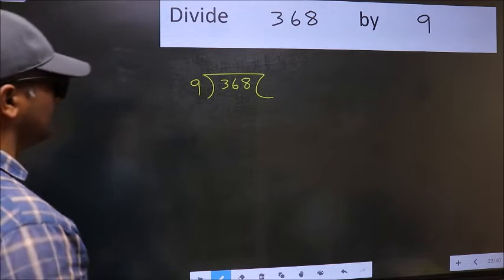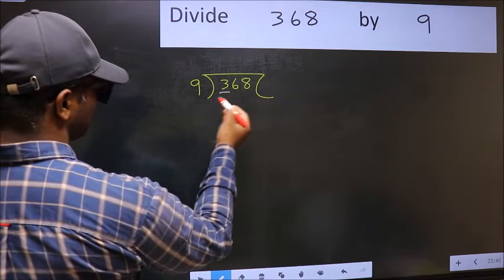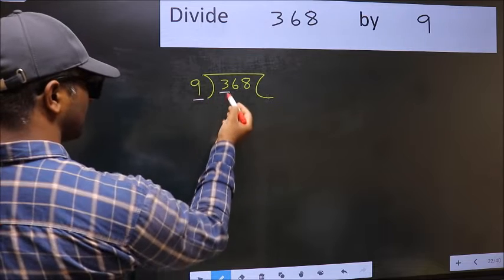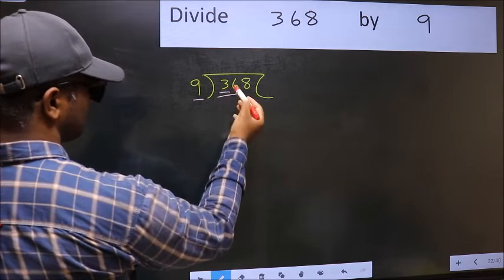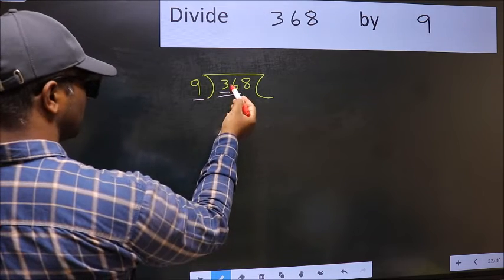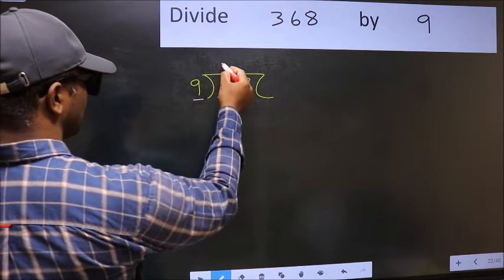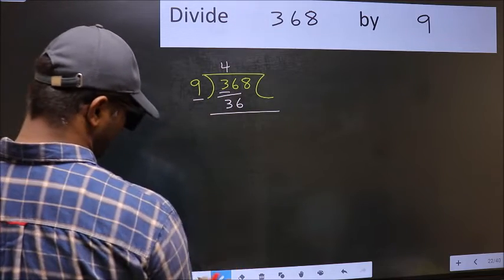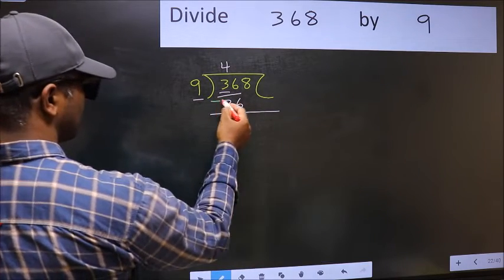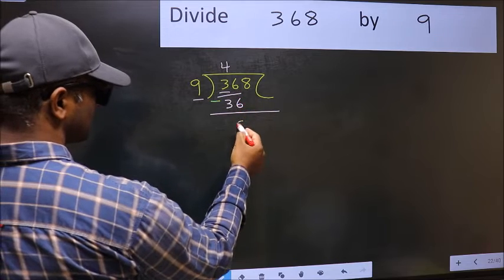Next. Here we have 3 and here 9. 3 is smaller than 9. So, we should take two numbers, 36. When do we get 36 in 9 table? 9 fours 36. Now, you should subtract. 36 minus 36 is 0.